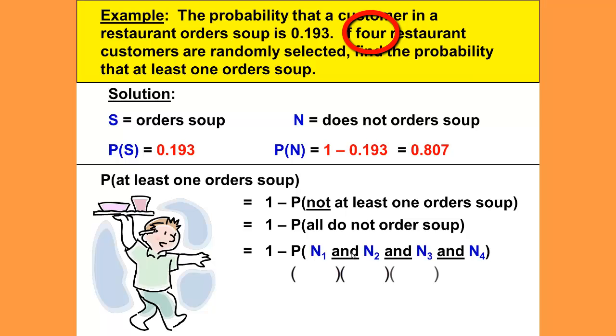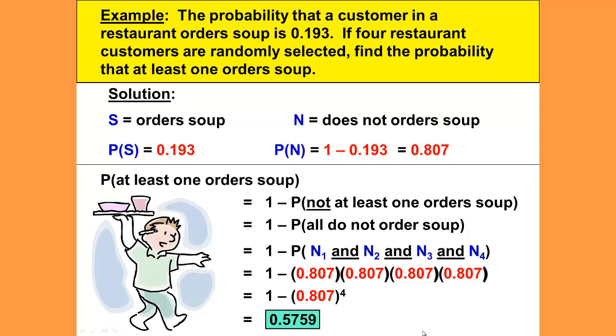She does N1 and N2 and N3 and N4. For me, instead of doing this step, I just draw 1 minus and then four parentheses here and then fill in 0.807 in each of the parentheses, or we can shortcut that: 1 minus 0.807 raised to the fourth power. Then just use your calculator to get the decimal 0.5759.